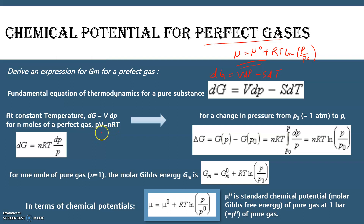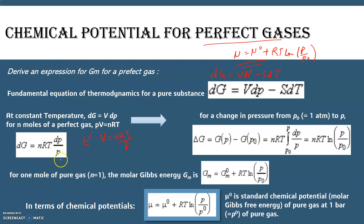We substitute V = nRT/P into dG = VdP to get dG = nRT dP/P. So we have rewritten dG in terms of VdP as nRT dP/P.